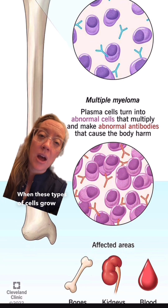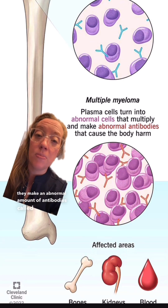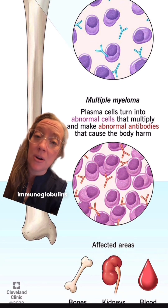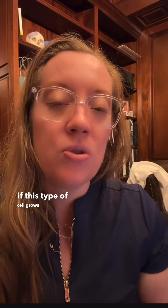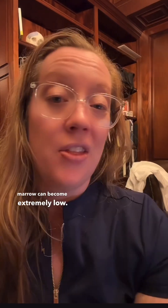When these types of cells grow out of control, they make an abnormal amount of antibodies called monoclonal immunoglobulins, or M-protein. You can imagine if this type of cell grows significantly within our bone marrow, normal cells that lie within our bone marrow can become extremely low — that includes red blood cells, white blood cells, as well as platelets.